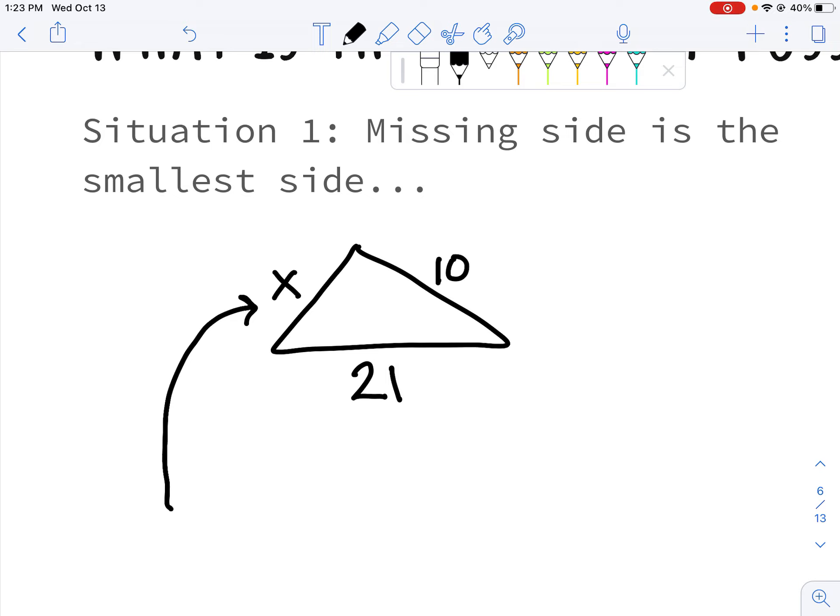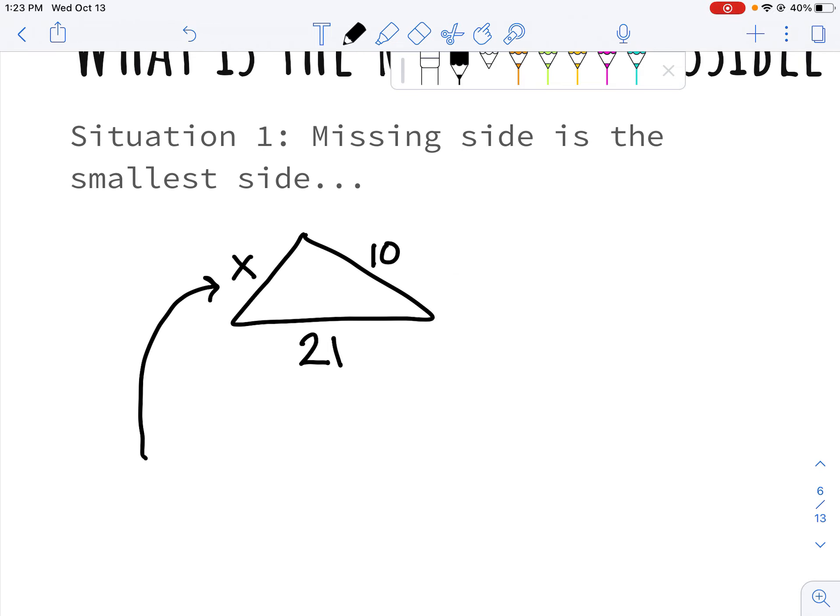And the smallest whole number that works is 12, right? Because 12 plus 10 is bigger than 21. But that's ruling out 11 and a half, and 11.2, and 11.1, and 11.01, and all of that.